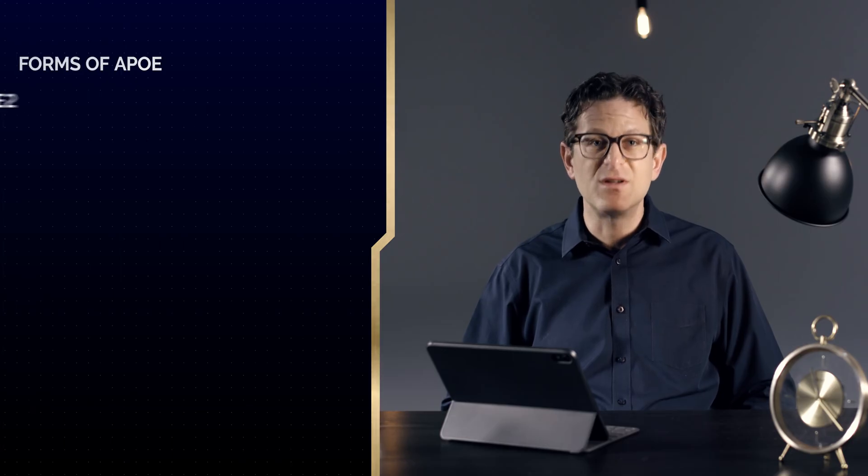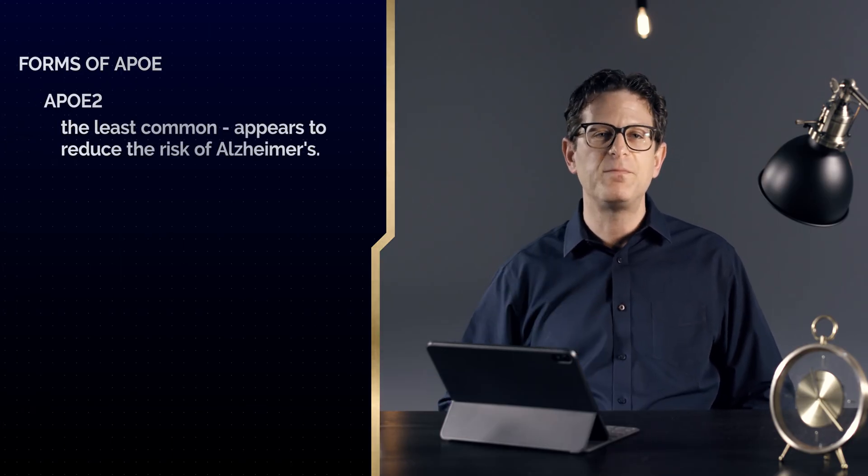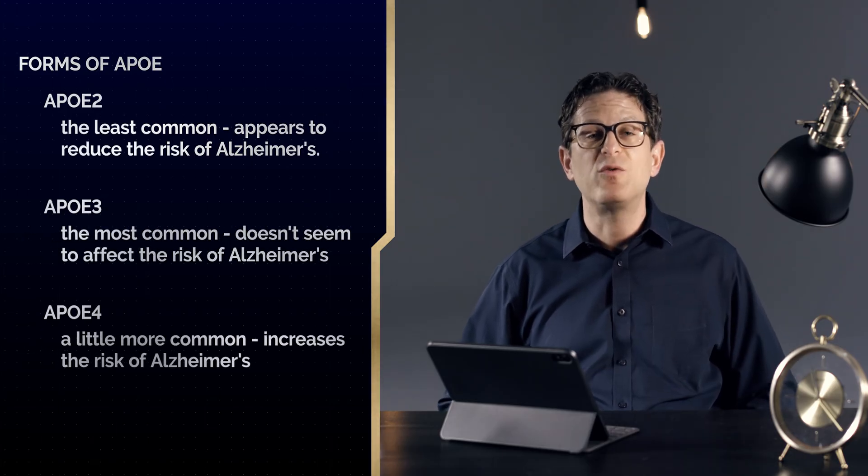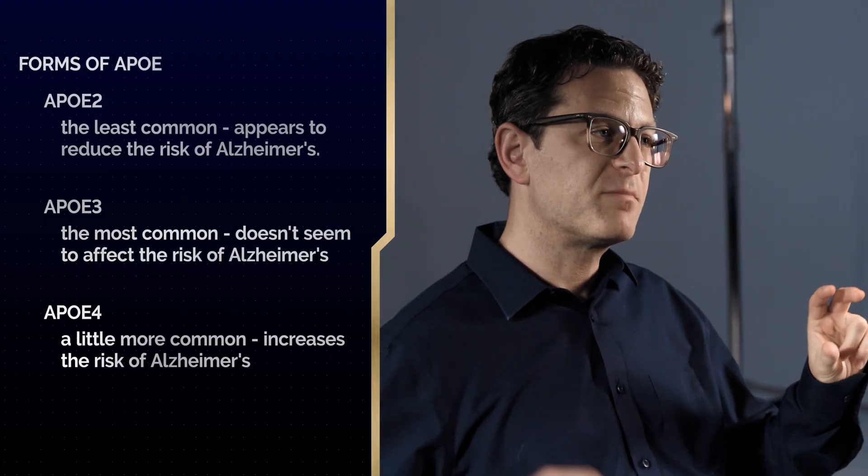APOE has three forms: APOE2, which is the least common form; APOE3, which is by far the most common; and APOE4. You get one from your mom and one from your dad, so people can have different combinations. By far the most common combination is APOE3-3, meaning a person has two APOE3 variants — at least 50 to 65% of the population has this neutral risk for Alzheimer's. If a person has an APOE2 variant from mom or dad, that can actually decrease risk and be protective against Alzheimer's disease, cardiovascular disease, and even high cholesterol.